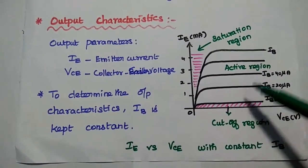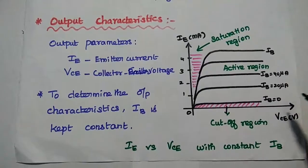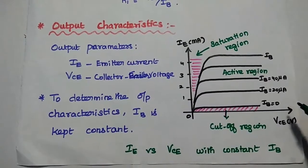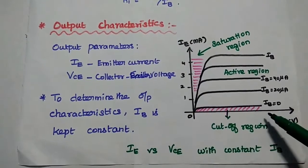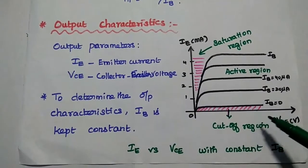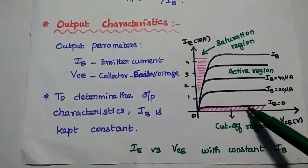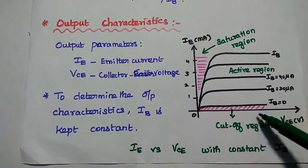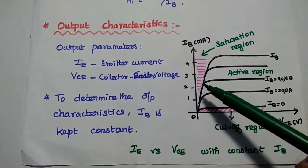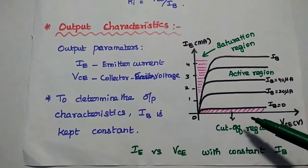In the cutoff region, the condition is IB equals 0, meaning the base is open and no input is given. In the transistor, there is only a very small current flow due to leakage current from the reverse bias condition, which is negligibly small. In this IB equals 0 condition, the emitter current is also almost 0, there is no output, and the transistor is in the off condition.